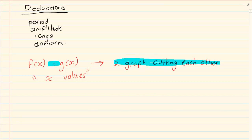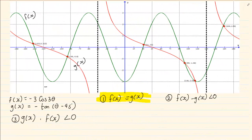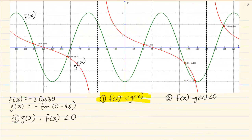Now these values are very specific — it's not running from one area to another. If you look at where the two graphs are cutting, it is cutting at minus 152 degrees, giving the point (−152°, 0.323).